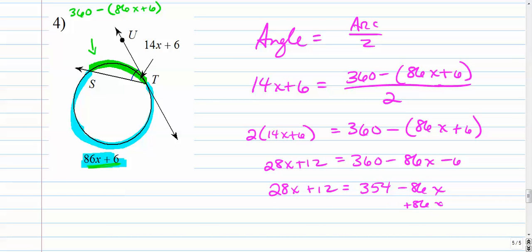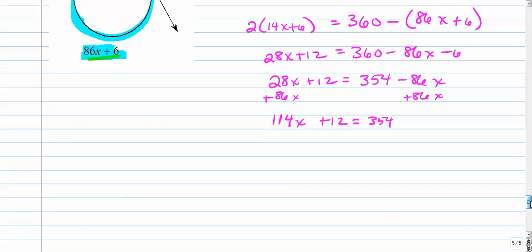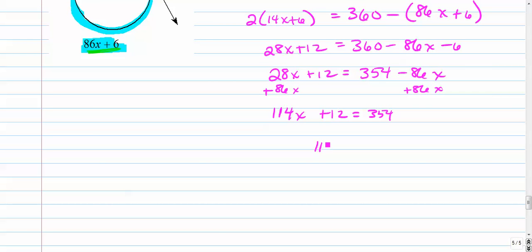Let's move the 86 over to the left by doing its inverse. So that's 114x plus 12 equals 354. Subtract 12. 114x equals 342. And that hopefully is 3.